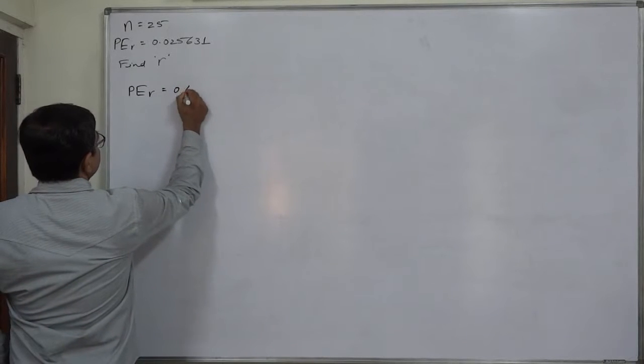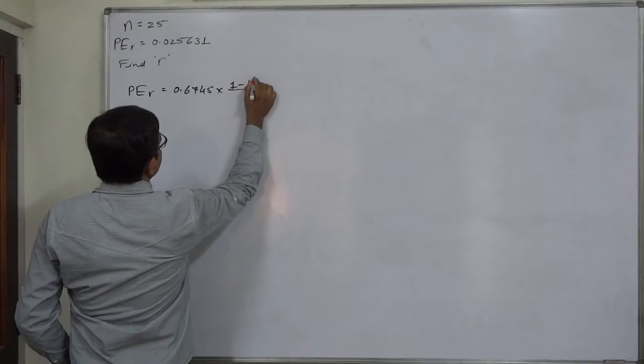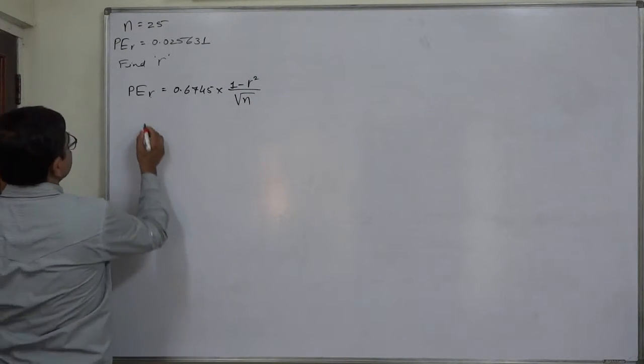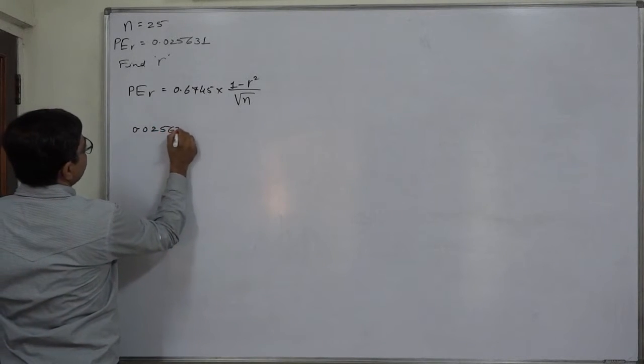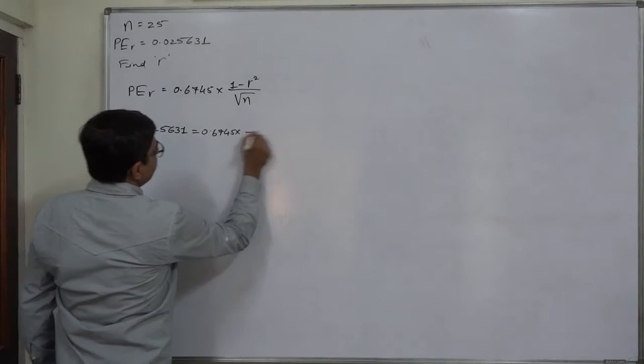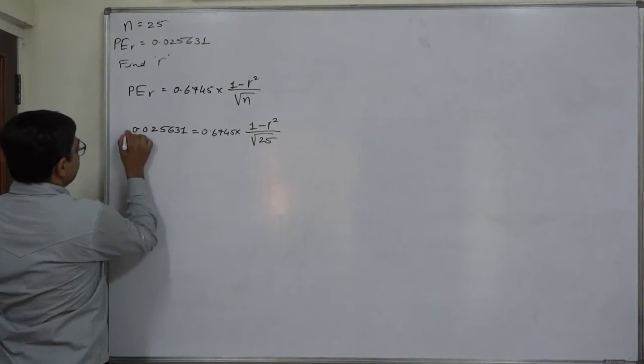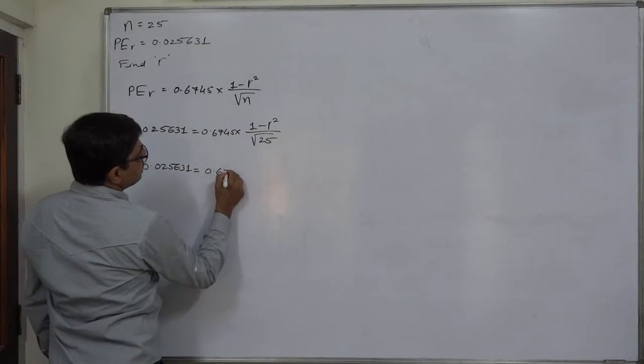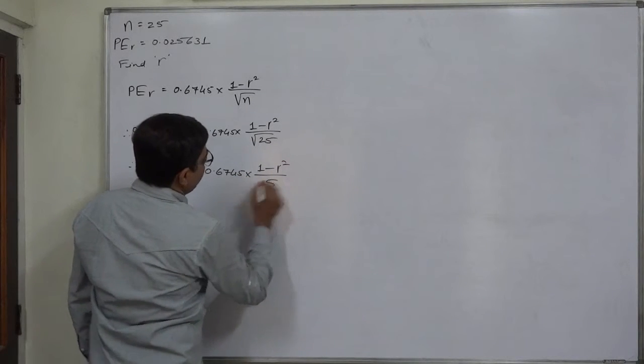Probable error equals 0.6745 times (1 minus r²) divided by √n. Now let us substitute the values: 0.025631 = 0.6745 × (1 - r²) / √25. That means 0.025631 = 0.6745 × (1 - r²) / 5.